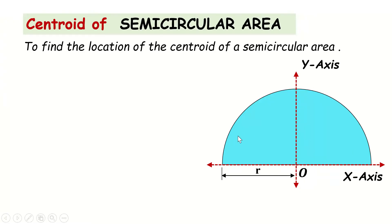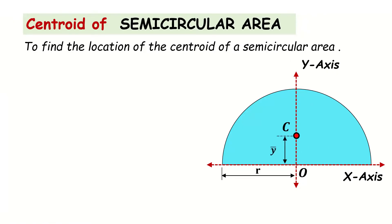As you can see, the y-axis is dividing this semicircle into two halves, which means the centroid of this semicircle is going to lie on the y-axis. The centroid lies here, and its x-coordinate is going to be 0 because it is lying on the y-axis. So the only unknown is the y-coordinate of this centroid.